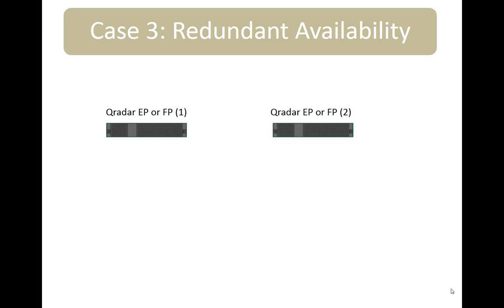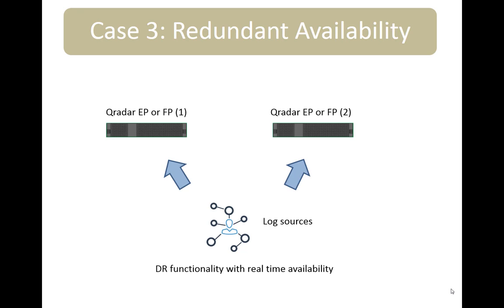Redundant availability is one of the new use cases we're seeing, and it is up and coming in popularity. Here I have a pair of event and flow processors — they might be in the same facility or the same city, but close enough to grab the vast volume of log data. Log sources send to both identically at the same time. If I lose event processor one or flow processor one, there is no break in service because all data is going equally to both all the time. Your QRadar console will immediately connect to the second one — you will probably have to re-log in, but nothing more. It essentially gives you DR-type functionality with real-time availability. There are some network questions to ask first before going this route, but it's definitely something we're seeing more of.